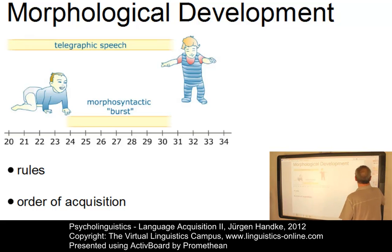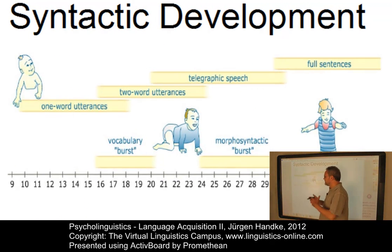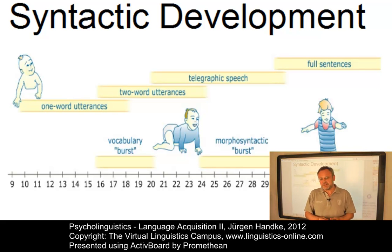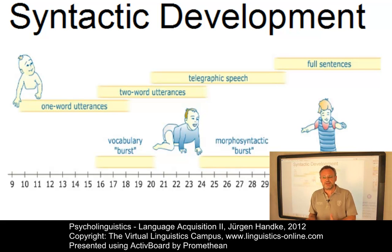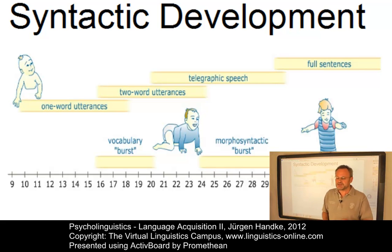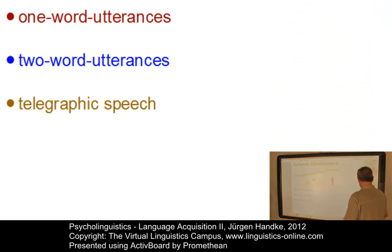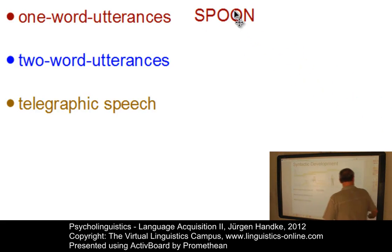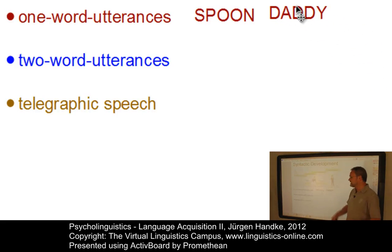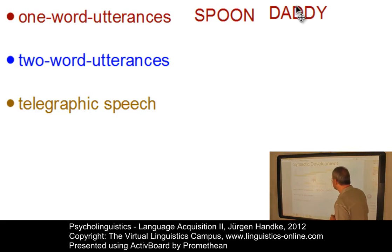Syntactic development starts out with a period of single-word speech which may begin as early as 10 months of age, shortly after the child begins to understand words. At first, children's utterances are one-word utterances and they do not show any structural properties — they are used to name objects in the environment. Later on during the one-word stage, children also use single words to articulate complex thoughts involving those objects. So in the one-word utterance we have words such as 'spoon' or 'daddy', and the child already expresses first requests and instrumental relationships even on the basis of one word.